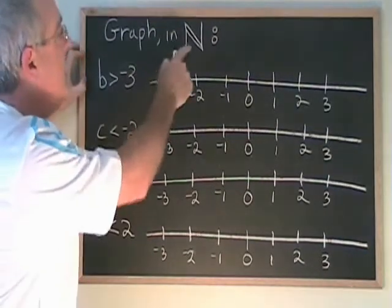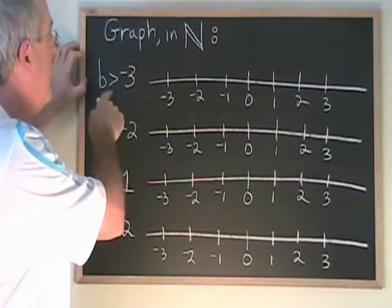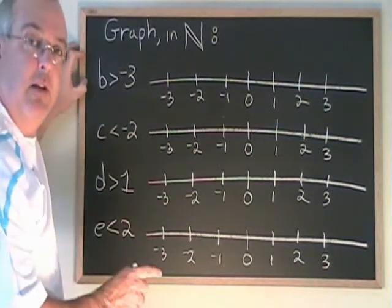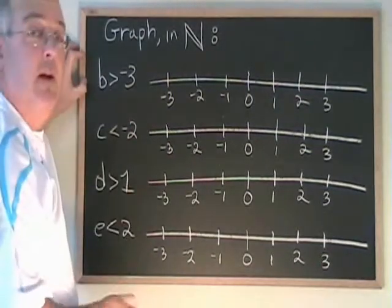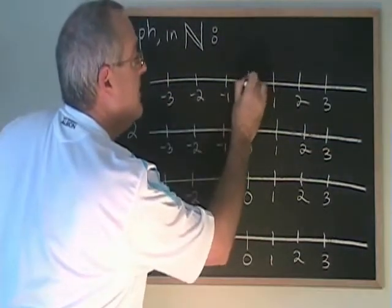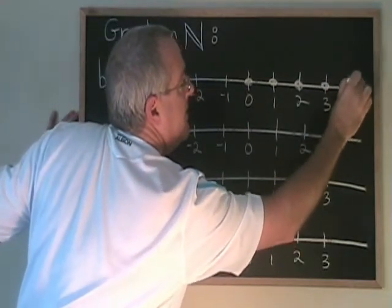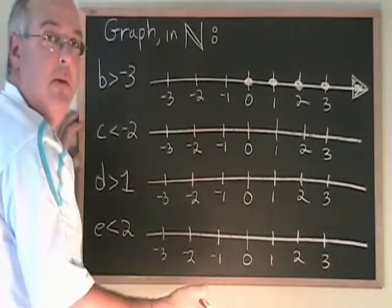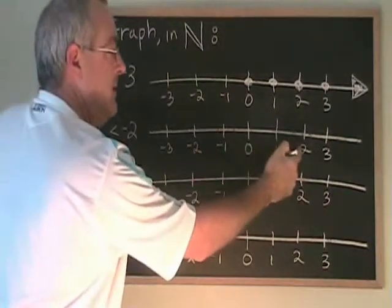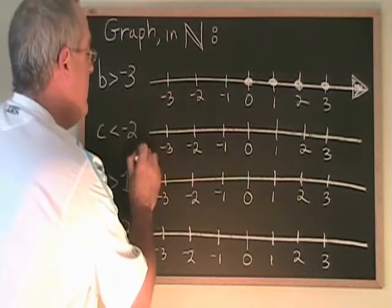Here are four more equations that we're going to graph in natural numbers. The difference is that I don't have the extra little line that means 'or equal to' in any of these. I have b greater than negative 3, c less than negative 2, d greater than 1, e less than 2. This changes things, but just a bit. b greater than negative 3: all natural numbers are greater than negative 3, so the natural numbers that are greater than negative 3 start with 0 and continue onwards forever in the positive direction. The negative numbers cannot be part of the answer because they are not natural numbers. c less than negative 2: the numbers that are less than negative 2 are to the left of negative 2 on the number line, and again, these are not natural numbers, so the answer is empty set. If I have to give the answer on the number line, I just give a blank number line.